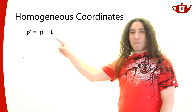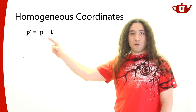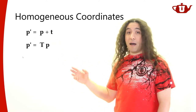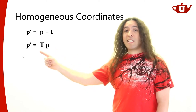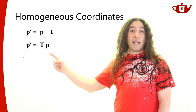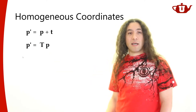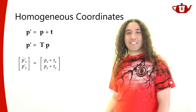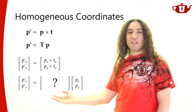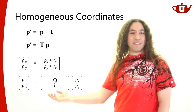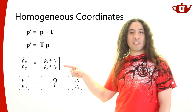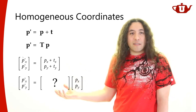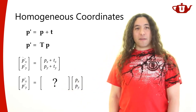That brings us to homogeneous coordinates. This term sounds complicated but it's actually a very simple, easy trick. It's going to allow us to represent translations as part of our matrices. Here's the problem: I want to do P prime equals P plus translation vector T, and I want to do this using matrix multiplication — a translation matrix times P. But there is no 2×2 matrix that can do this, because this is addition, not multiplication.